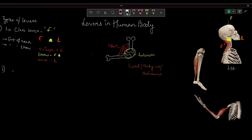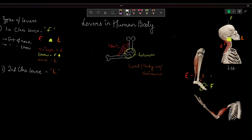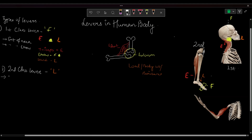Moving on to the second class lever, or second order lever. In the second order lever, the load is always situated in between the fulcrum and effort. Let's see the example of Zee again, who is standing on his toes. The weight falls on the center of his foot, which is the load. The posterior leg muscles are working as effort while the toes are working as fulcrum. The load is in the center, representing the second class lever.